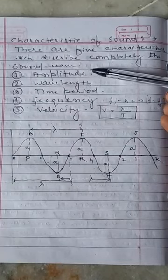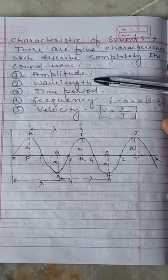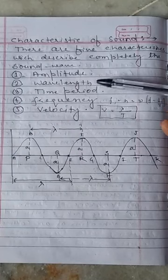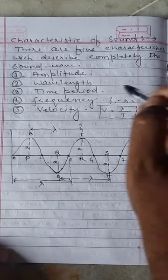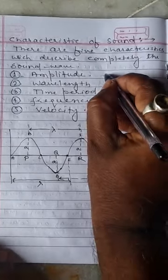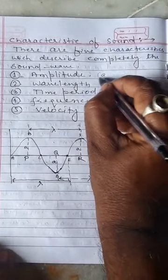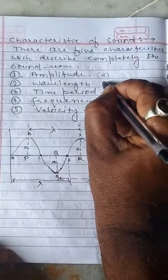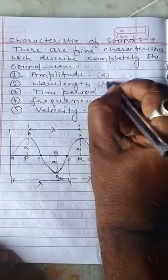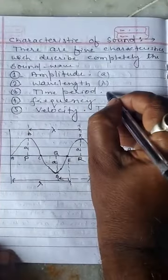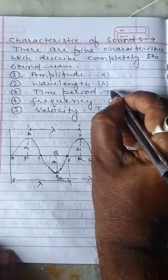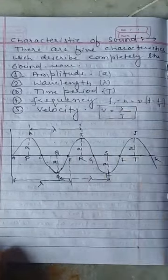To summarize: the five characteristics of sound are amplitude, wavelength, time period, frequency, and velocity.